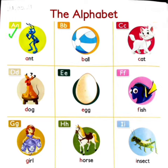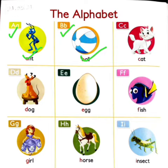Which letter is this? It is A. A says A — Ant. B says B — Ball. C says C — Cat.